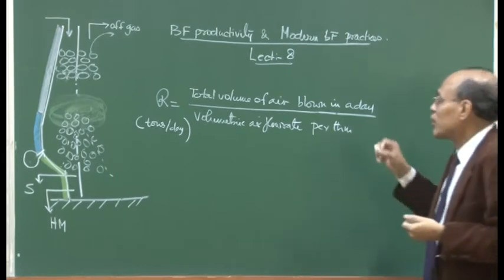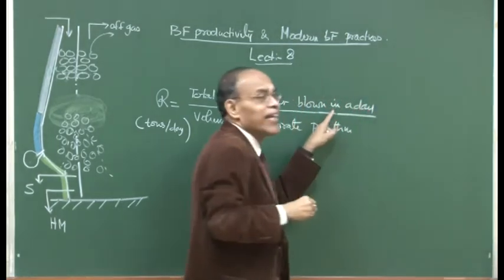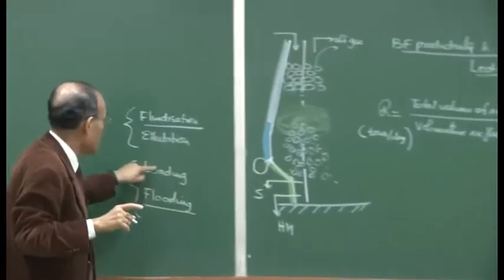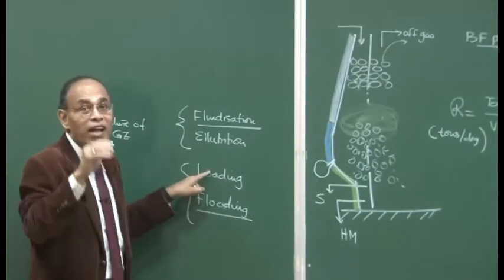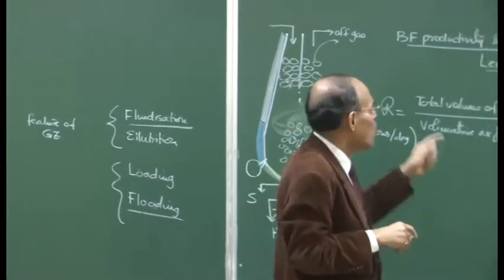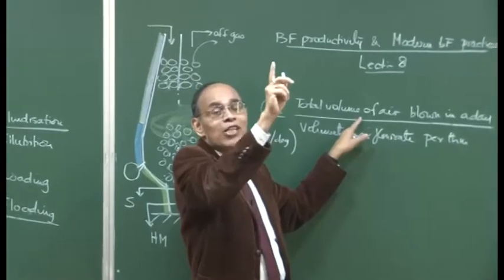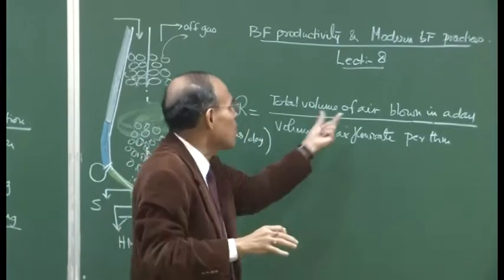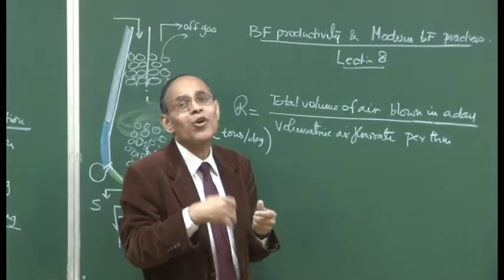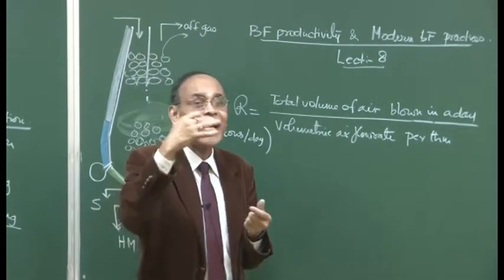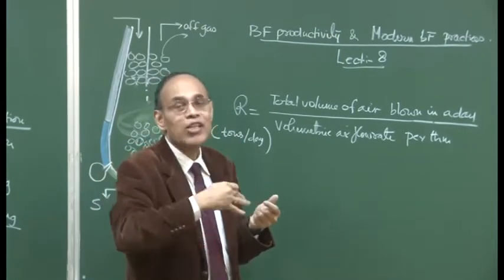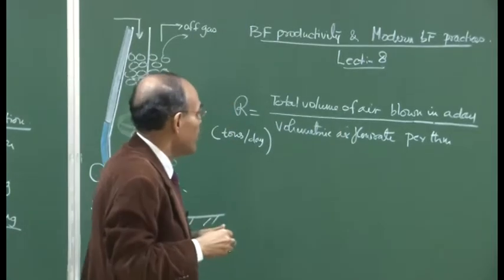The gas flow rate can only reach a critical amount sufficient to withstand pressure without manifesting these phenomena — that is the desirable maximum gas flow rate. Most furnaces operate at that maximum. You do not have much maneuverability regarding total volume of air blown, because you cannot increase beyond the critical level; most furnaces operate within minus 5 to 10 percent of that level.